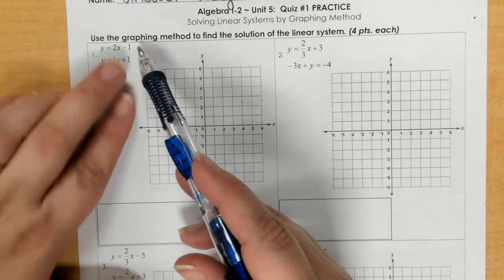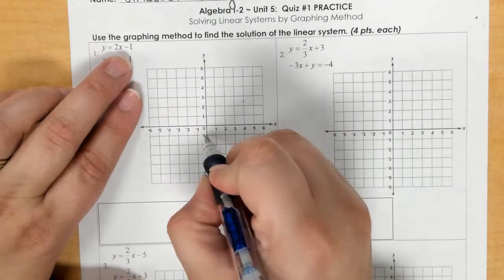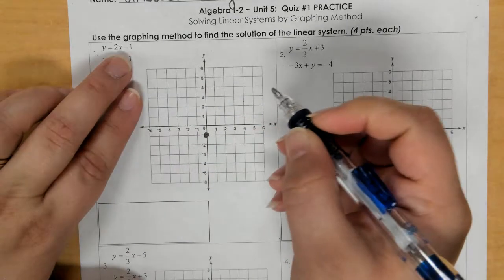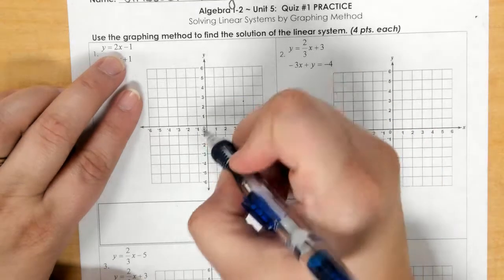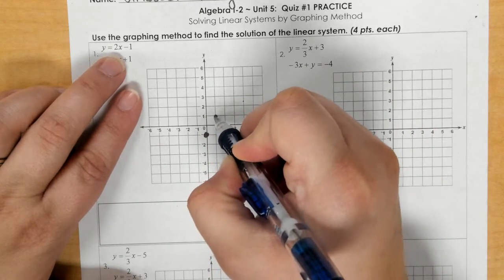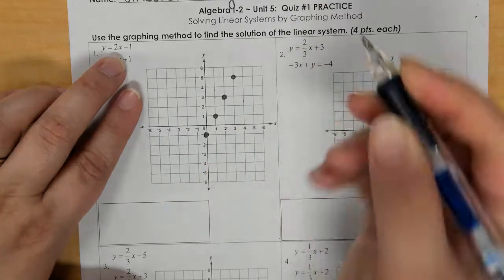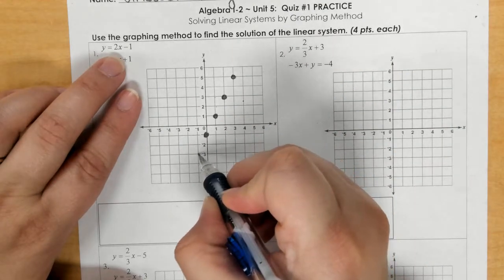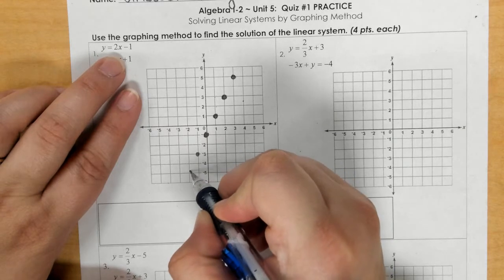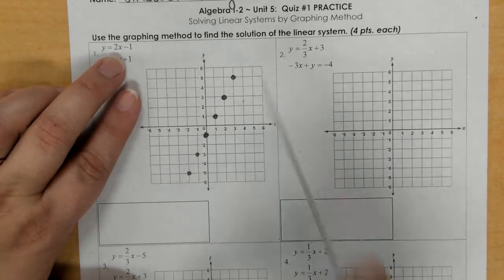We need to graph the first one starting at negative 1. Then I will rise 2, run 1. Rise 2, run 1. We also can go down to left 1 and draw our line.